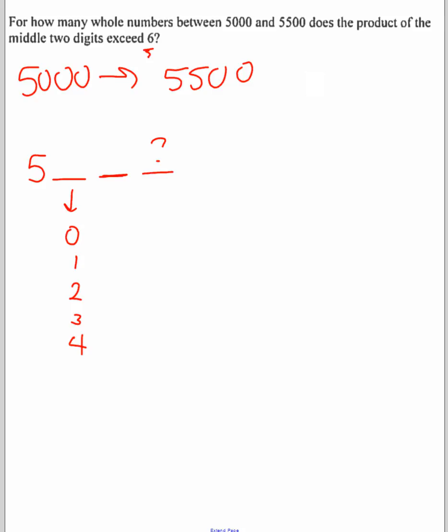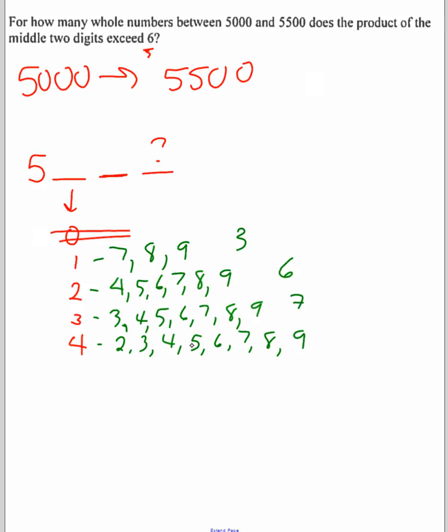So now your job is to think, with each of these possibilities for my hundreds place, what ones will give me a product that exceeds six? If I had a 0 there, nothing will give me a product that exceeds six. What if I had a 1 there? I could have a 7, an 8, or a 9 for my tens space. I can't have a 6 because that doesn't exceed. What if I had a 2 there? I could have 4, 5, 6, 7, 8, or 9. What about if it was a 3? I could have 3, 4, 5, 6, 7, 8, or 9. And what if it was a 4? I could have a 2, 3, 4, 5, 6, 7, 8, or 9. So these are all the possibilities. I've got 3 there, 6 there, 7 there, and 8 there. So I've got a total of 24 possibilities.